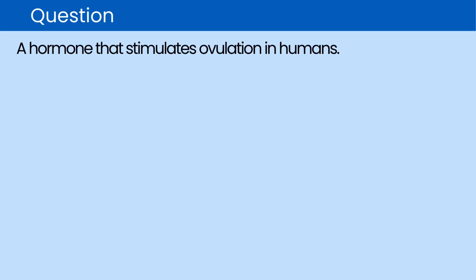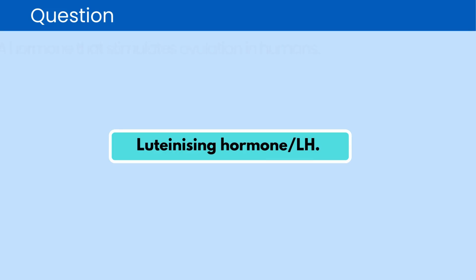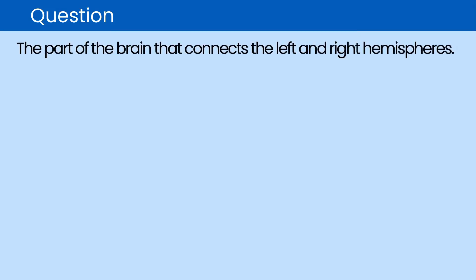Question. A hormone that stimulates ovulation in humans. The correct answer is luteinizing hormone LH. Question. The part of the brain that connects the left and right hemispheres. The correct answer is corpus callosum.